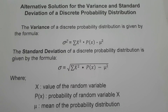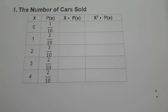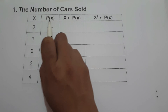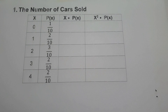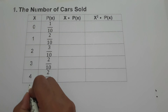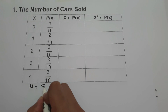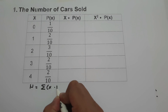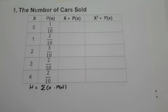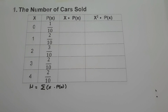Let's start with our first example: the number of cars sold. In the given table, we have the value of x and p(x). Here x represents the value of the random variable or the number of cars sold, and p(x) is the probability of random variable x. The first step to find the variance and standard deviation is to find the mean using the formula: summation of x times p(x).